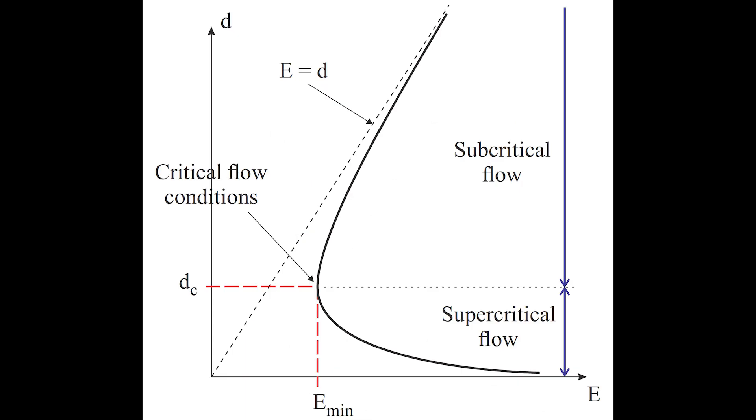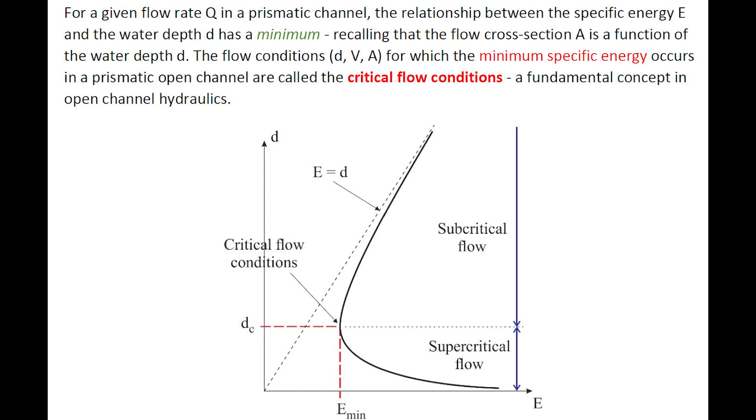The flow conditions—depth d, velocity V, cross-section area A—for which the minimum specific energy occurs in a prismatic open channel, are called the critical flow conditions, a fundamental concept in open channel hydraulics.